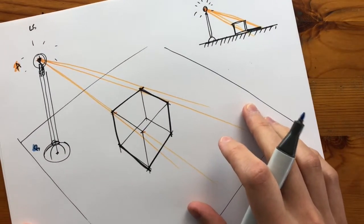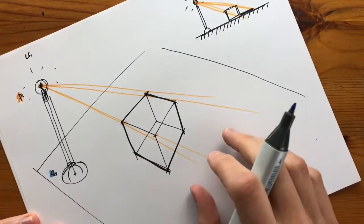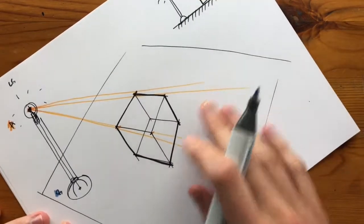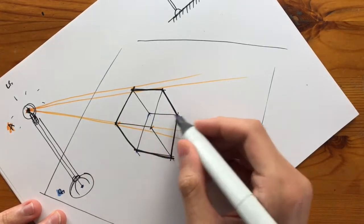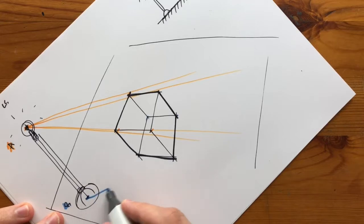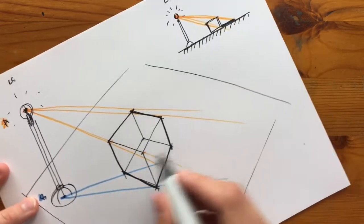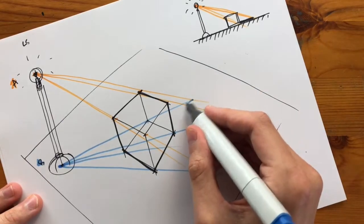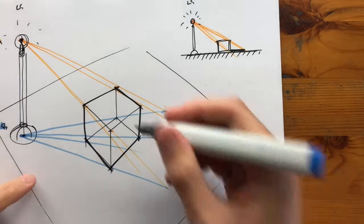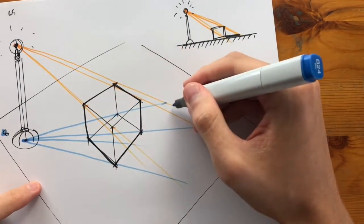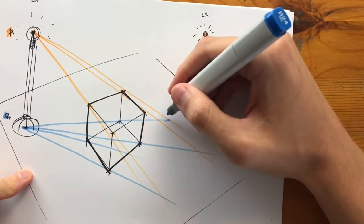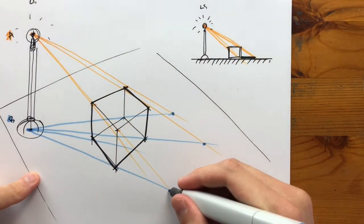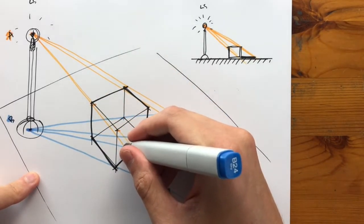The second color — blue — denotes the bottom point, to establish where on the surface the shadow will stop. I'll cast this to all four corners and extend it. Now we're finding where the lines sharing the same vertical intersect, and that intersection point is where we have our shadow construction.